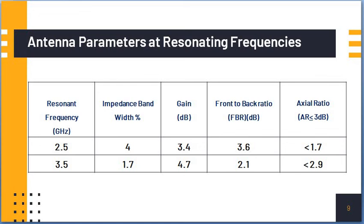And for the upper band, 3.5 GHz, the impedance bandwidth percentage is 1.7, gain is 4.7, and front to back ratio is 2.1 dB. The axial ratio is less than 2.9 dB.